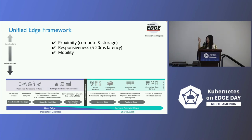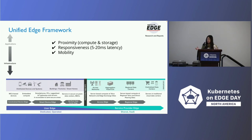The service provider Edge goes all the way to the centralized data centers. We have Edge Cloud, AWS Wavelength, Anthos from GCP, and Azure from Microsoft. All of them have proximity, compute and storage, responsiveness — 5 to 20 millisecond latency — and they all have mobilities.